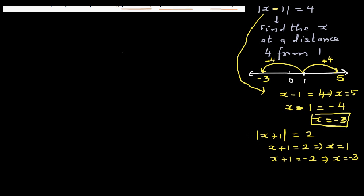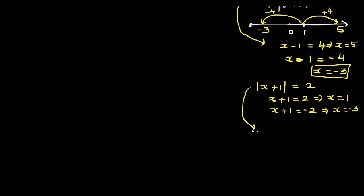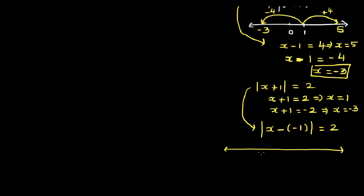What does this mean graphically? This is asking: |x - (-1)| = 2 — which are the x's at a distance of 2 from -1? Say this is 0 and this is -1. Going 2 to the right from -1 you arrive at 1; going 2 to the left from -1 you arrive at -3. And those are exactly the answers.